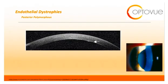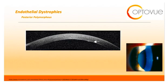The other common endothelial dystrophy is posterior polymorphous dystrophy, which appears as vesicles arranged in a linear or grouped fashion with a grayish haze and broad bands on the corneal endothelium. OCT will show a thickened hyper-reflective material on the corneal endothelium with extension into the anterior chamber.